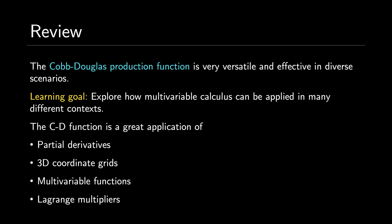The Cobb-Douglas production function is a nifty function we can use in diverse scenarios, such as analyzing trends in production as they relate to factors like labor and capital. As we saw in the last case study, it becomes really useful if you want to minimize cost or even maximize profits, but it all comes down to hard-boiled calculus. My learning goal was to explore how multivariable calculus can be applied in many different contexts, and the Cobb-Douglas production function is a great application of concepts relating to partial derivatives, 3D coordinate grids, multivariable functions, and Lagrange multipliers. It's also important to note that even though this was in the field of economics, it still relied heavily on calculus-based concepts, because in economics — especially microeconomics — we are always trying to maximize or minimize different monetary quantities.